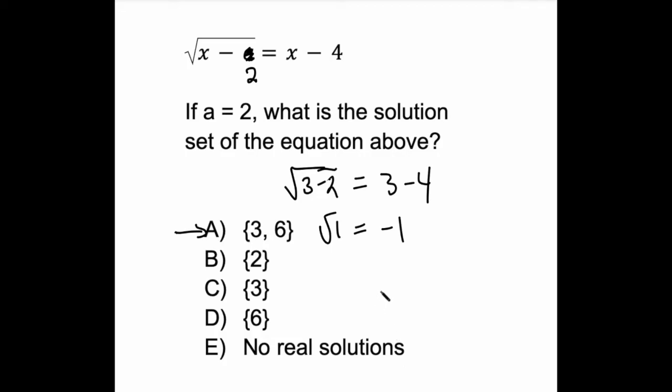Some folks at this point might say, well yeah, because negative 1 squared is equal to 1. But, and this is very important, the square root symbol by definition is the principal square root. It's asking for the positive square root. So if you see this on the test, if you see the square root of 1, it's not plus or minus 1, it's just 1. Meaning that A is not correct and neither is C.